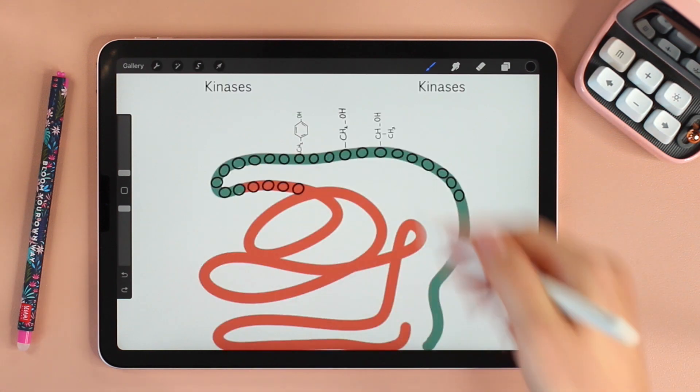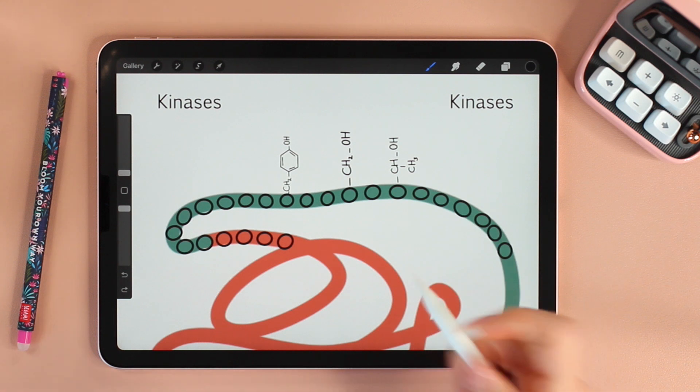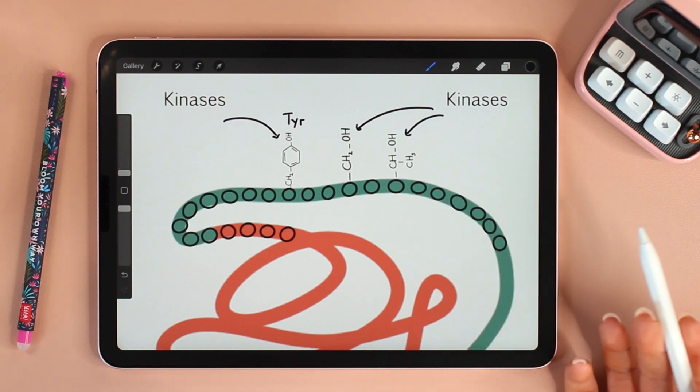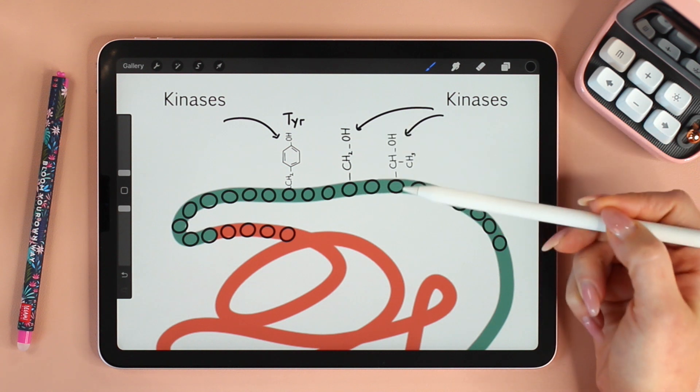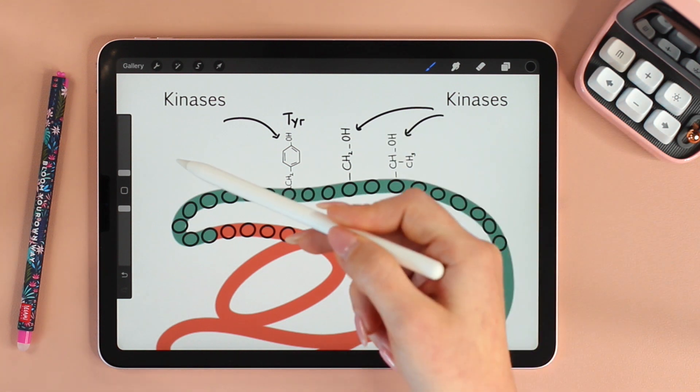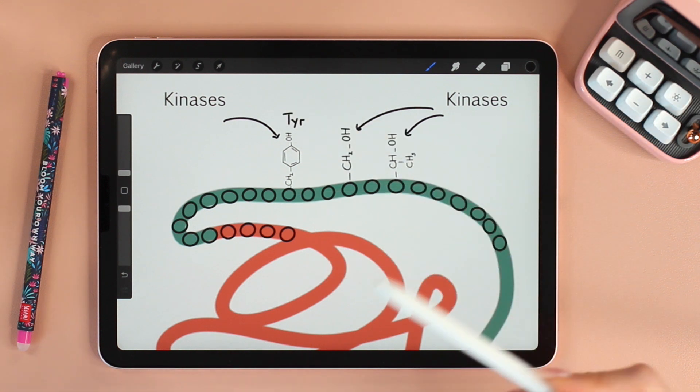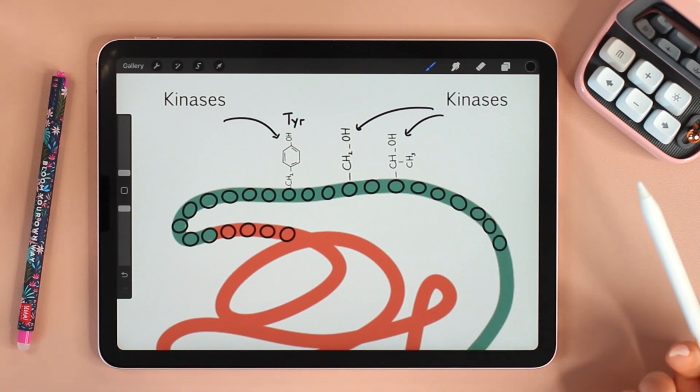We often sketch proteins as lines. But if we really look closely, they are made up of amino acids. In eukaryotes, there are two classes of kinases. Those that add a phosphate group to serine and threonine residues, and those that add a phosphate to tyrosine residues, which is the case of the receptor tyrosine kinases we are discussing today.